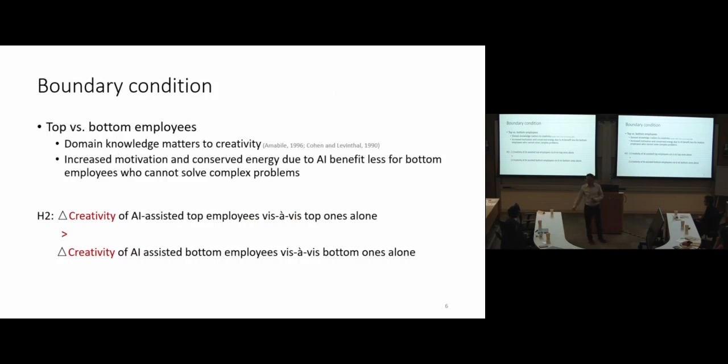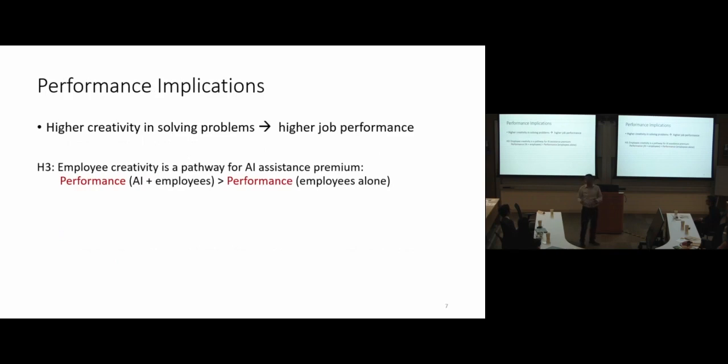Second will be a boundary condition, heterogeneity between the top and bottom agents. The top agents that have more skills and domain knowledge, the increased intrinsic motivation and conserved energies due to AI systems are going to matter more for top agents because they can solve the problem on hand. For bottom agents, they're rookies, newly hired. They're not there yet. So our second expectation would be the delta, the increase of creativity, will be much stronger for top agents.